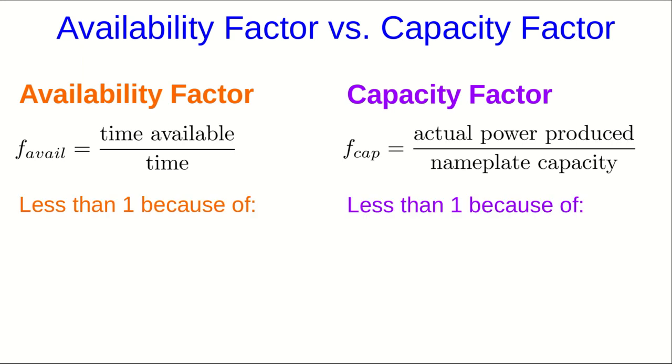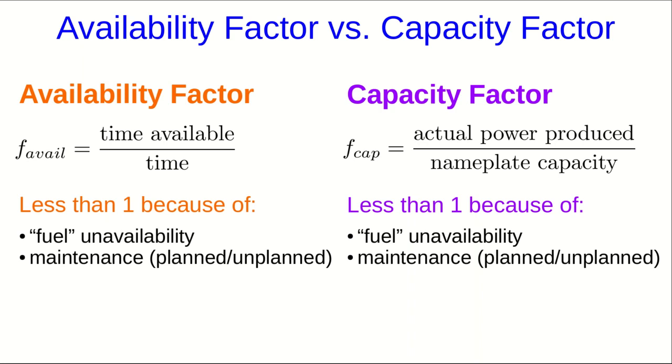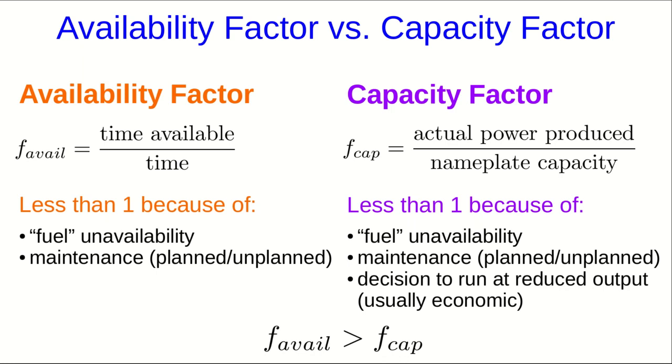Both of these tend to be less than one because of different causes. Availability factor can be less than one because of fuel unavailability, where things like wind and sunlight count as fuel, and or for maintenance. Capacity factor can be less than one for all of those reasons, but also because of decisions, usually economic decisions, to run at reduced output. So the availability factor is always greater than the capacity factor.